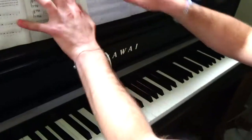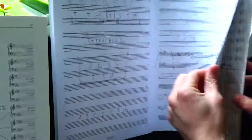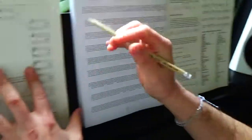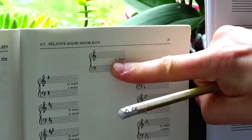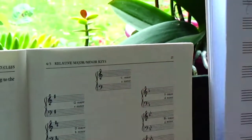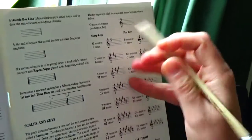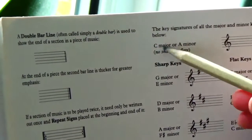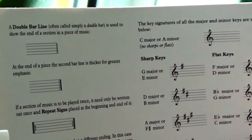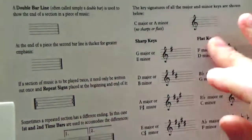We can double-check on the theory book and on my manuscript. As you may have noticed in the previous video, where I said to ignore the mention of the minor key, it reads: C major or A minor — no sharps or flats. Blank. Empty.